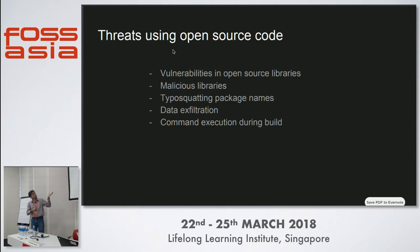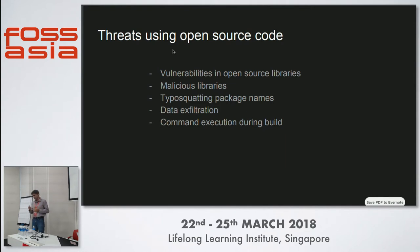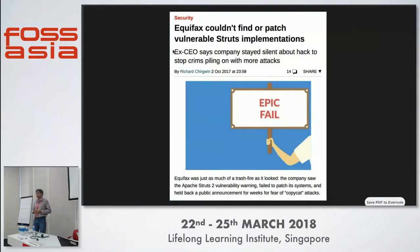There's also the leftpad incident where a developer unpublished their library, the namespace became available again, and someone registered their own library in its place — so your build would pull in the wrong package. Each package manager or build system also allows some kind of command execution, so you can do things like data exfiltration — extracting environment variables which might contain AWS keys — and command execution during build. Equifax is one of the most well-known examples: the single largest data breach in history, caused by using an old vulnerable version of Apache Struts.